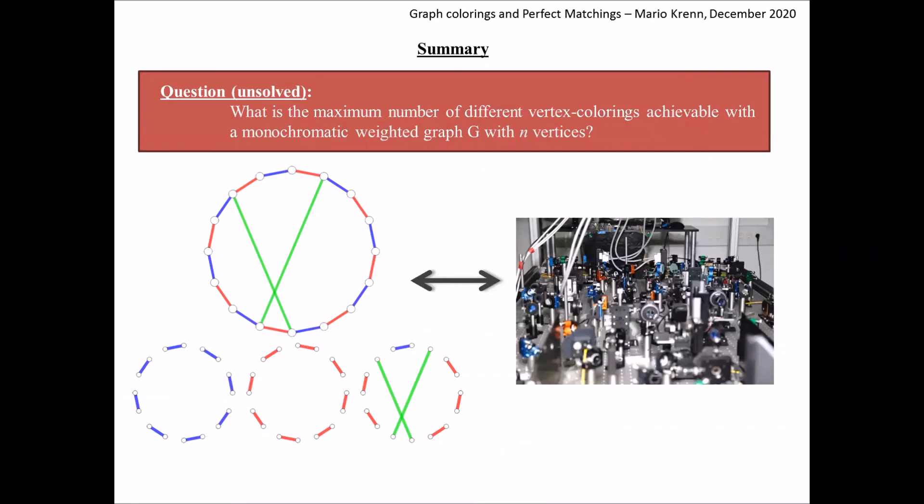Let me quickly summarize. The main question asks about the maximum number of different vertex colorings in a monochromatic weighted graph with n vertices. The question is directly motivated from quantum physics and I expect its solution will give exciting new insights into the potential of quantum interference. Therefore I set a €3000 reward for the solution. I will add additional background information about the connection to quantum physics in the video description. I would be delighted if someone can shed some light into this topic. Thanks.